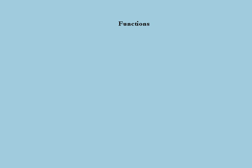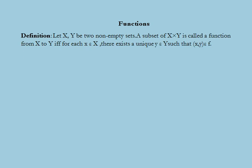A function is a special case of a relation and can be defined by considering x and y, which are two non-empty sets. A subset f of x into y is called a function or mapping from x to y, with the condition that each element x belonging to x has a unique y belonging to y such that (x, y) belongs to function f, represented as f: x → y.